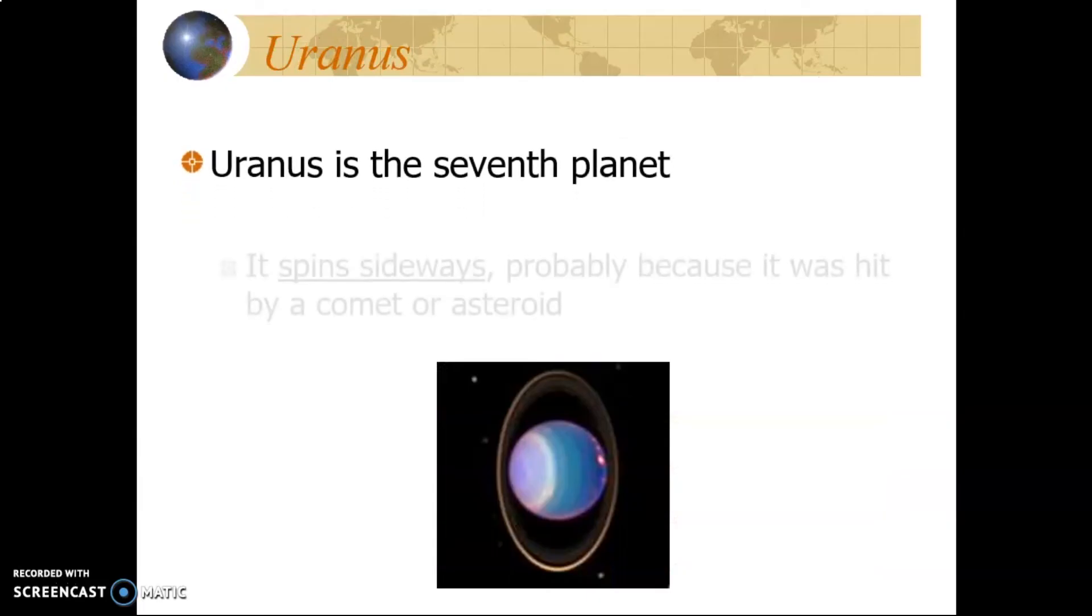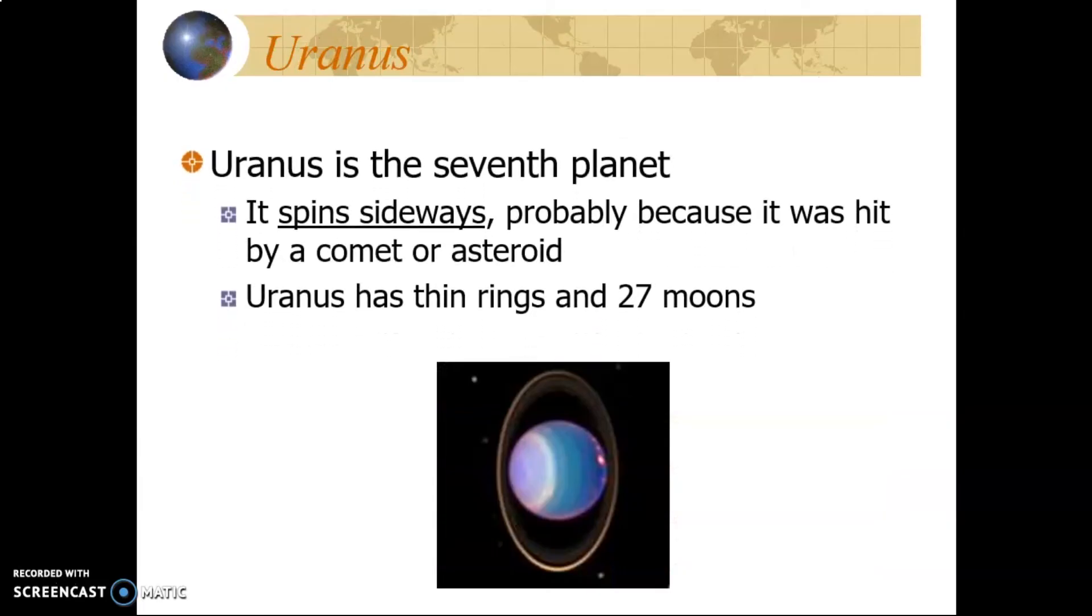Uranus has an unusual story, mostly because it turns sideways compared to the other seven planets. Uranus spins sideways, probably because it was hit by a comet or asteroid that disrupted its normal movement. This planet has thin rings and 27 moons.